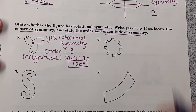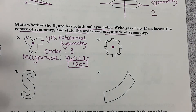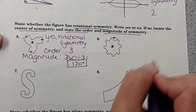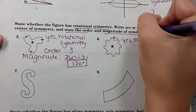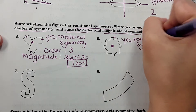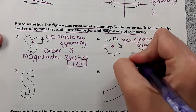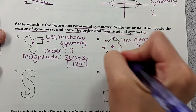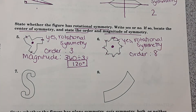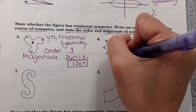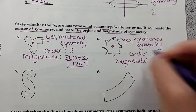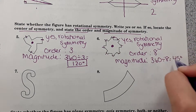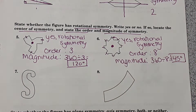Number six — the center is right here, easy to find. Does it have rotational symmetry? Yes — you could rotate it just one little turn and it would land on top of itself. The order: let's count the spikes — one, two, three, four, five, six, seven, eight — the order is eight. The magnitude of rotation is 360 divided by eight, which comes out to 45 degrees. So if you rotated the shape 45 degrees, it would land on top of itself.